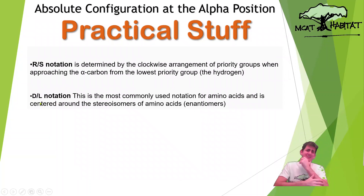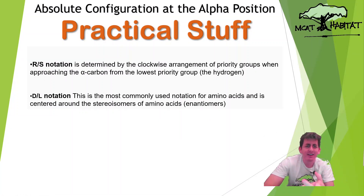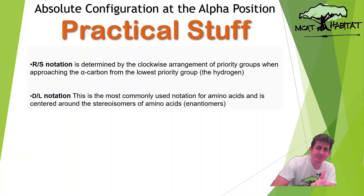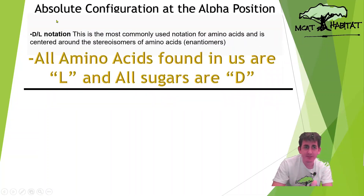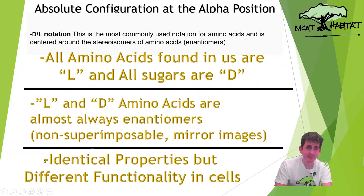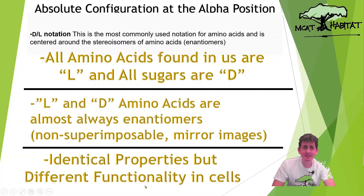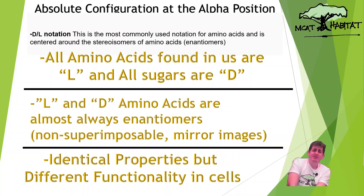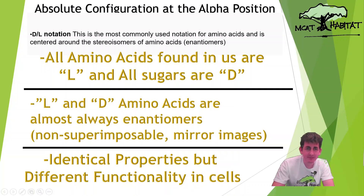D and L is our second configuration. It's most commonly used for amino acids, centered around naming the stereoisomers of amino acids — their enantiomers. All amino acids found in us are L-amino acids, and all sugars found in us will be D-sugars. They have the same physical properties but different functionality. D-sugars work well with our cells, while L-glucose doesn't work well with our cells. That's why we have D-sugars and L-amino acids.